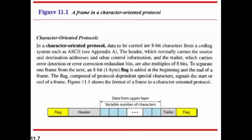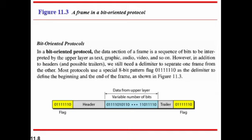For variable size framing, headers or indicators must be used to mark the start and end of a frame. One approach is the character-oriented protocol, in which flags are placed at the start and end of the frame. The frame contains a header with source and destination addresses, followed by data characters, with the beginning and ending highlighted by flags.